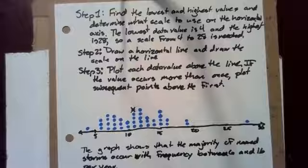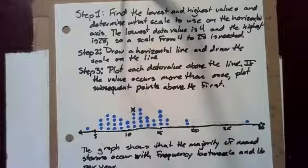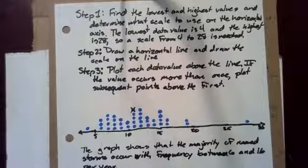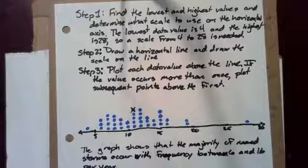Anyway, then we draw a horizontal line and draw the scale on the line, which clearly I've done. And finally we plot each data value above the line. If the value occurs more than once, I plot subsequent points above the first.